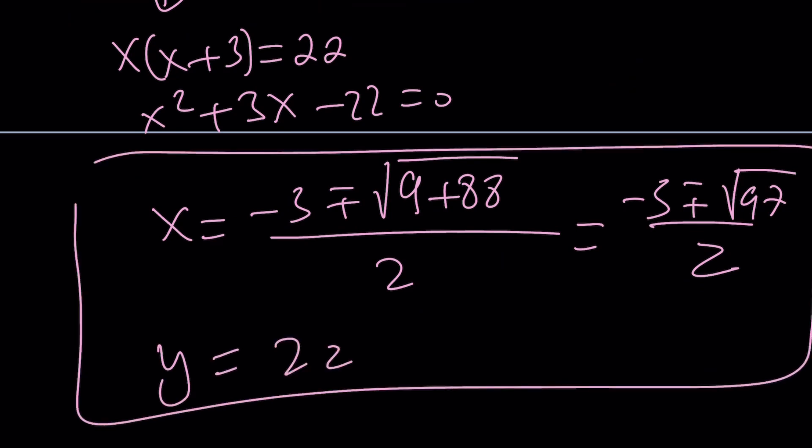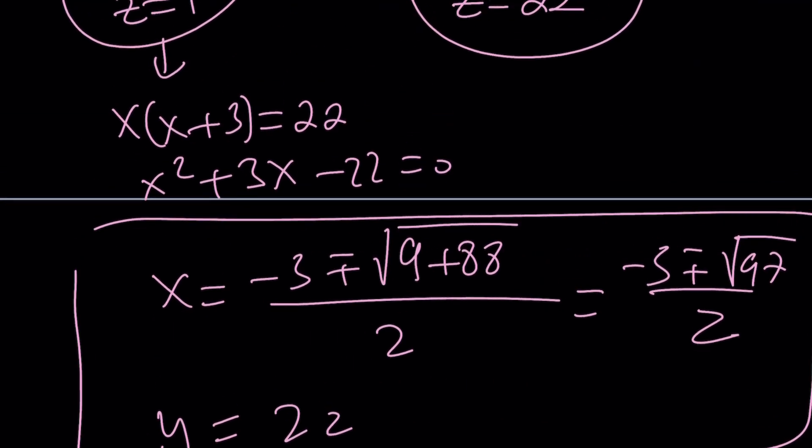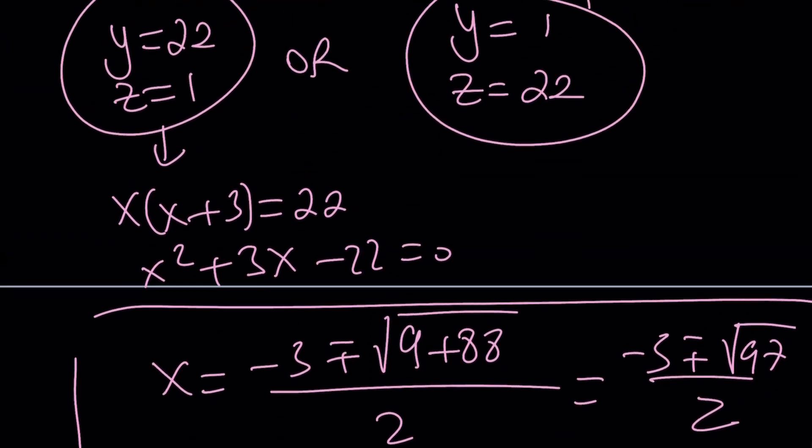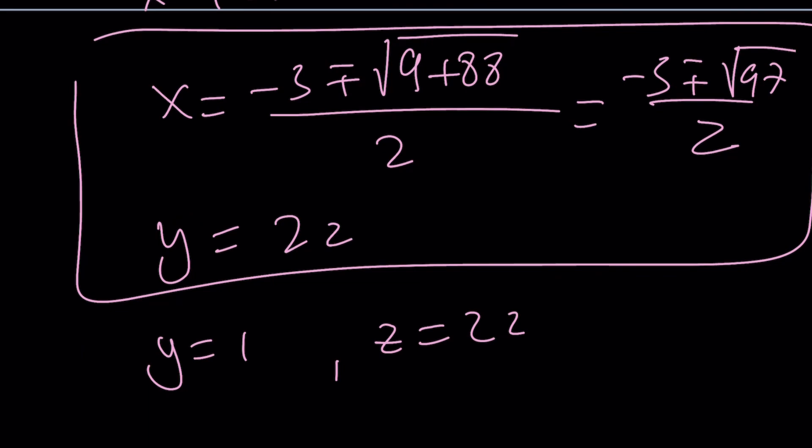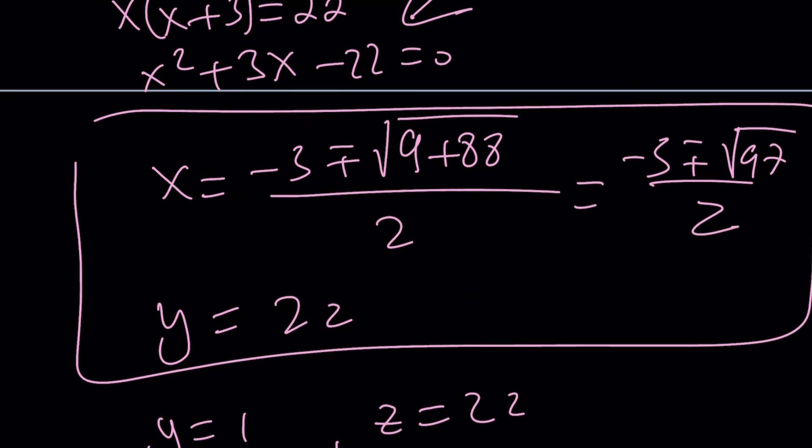And if y is equal to 1 and z is equal to 22, wait a minute, I think I messed up. y is 22, y is 1. Okay, y is 1. So y is 22, I messed up on this one. This belongs to the other one. Okay, here we go. It's for this one. Now we're doing y equals 22 and z is 1. y is 22 and z is 1. Sorry about that.